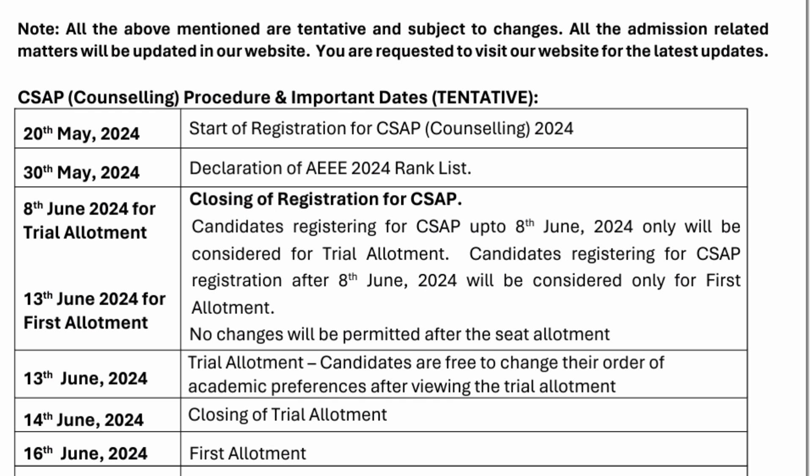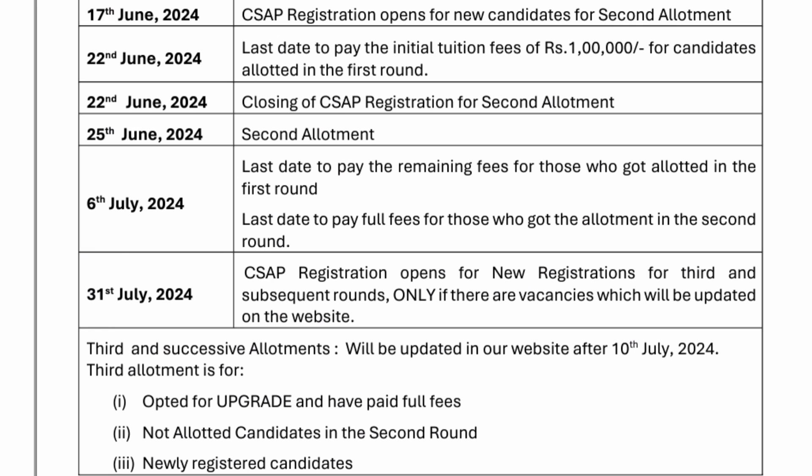The actual first round allotment is going to happen on 16th June. From 17th June onwards, they will start the second round allotment process. Registration for the second round will start from 17th June, and 22nd June is the last date to pay the initial fees of 1 lakh rupees — this is applicable for students who got a seat in the first round.